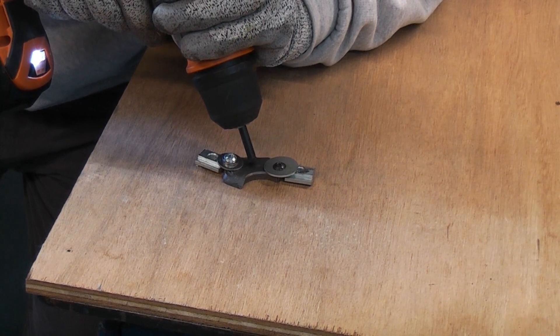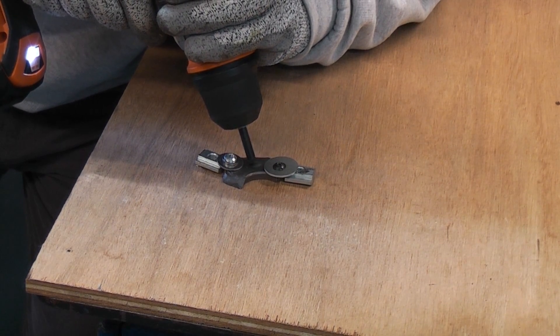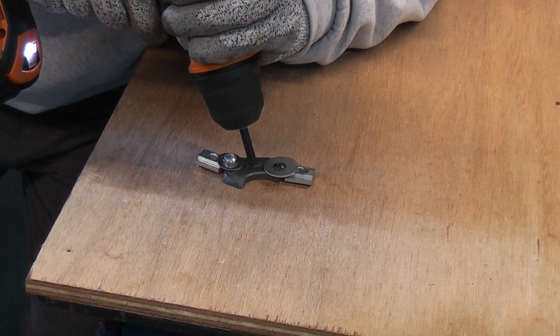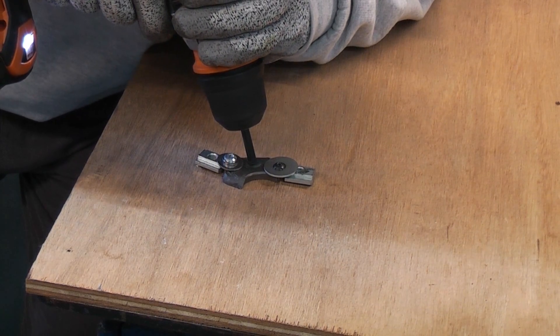So in order to get this started I'm just going to start on an angle until it bites into the tungsten and then I'm going to tip the drill upright.